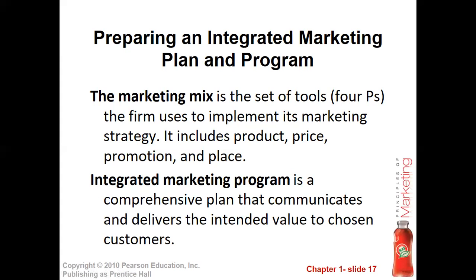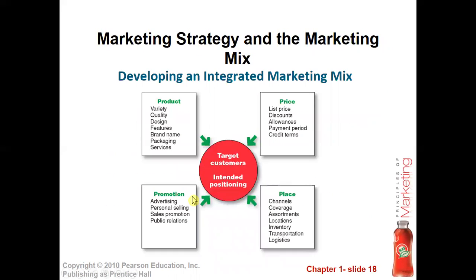The integrated marketing plan is a comprehensive plan. When we put together these four Ps — product, price, promotion, and place — we will be able to create value for customers. We will be able to create goodwill. Now let's look at the four strategies: developing the integrated marketing mix, or looking at the four Ps.